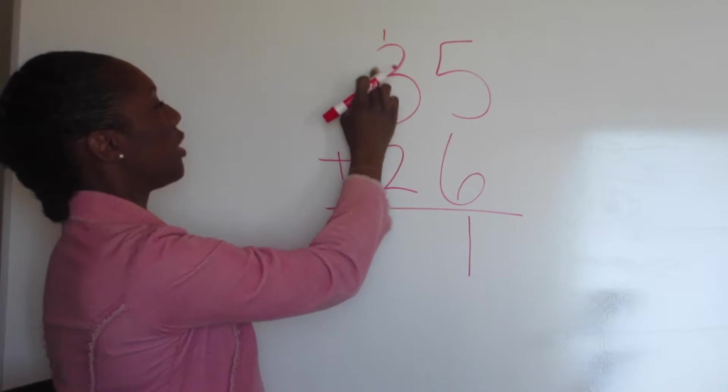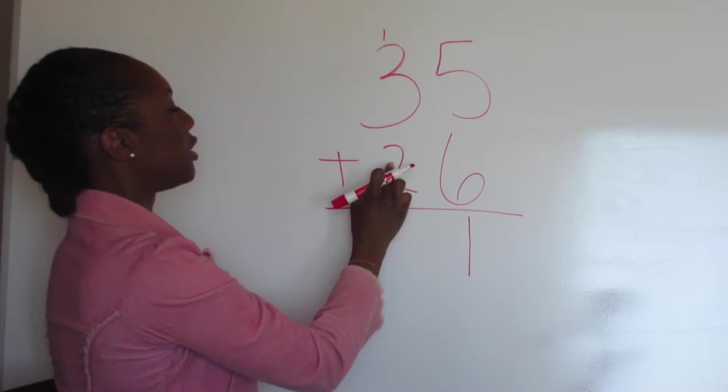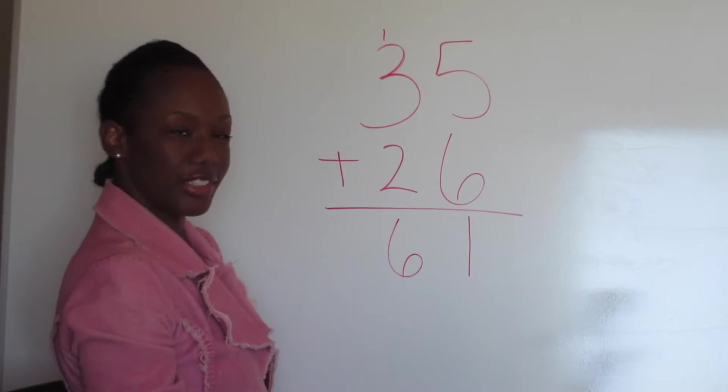Now we add up everything on the left. So we start with 1 plus 3: 2, 3, 4 plus 2: 5, 6, 61.